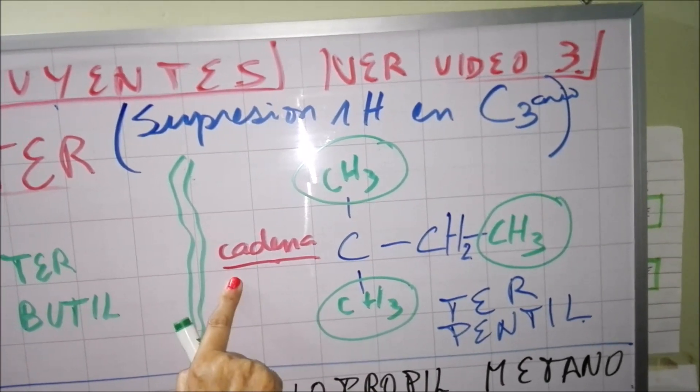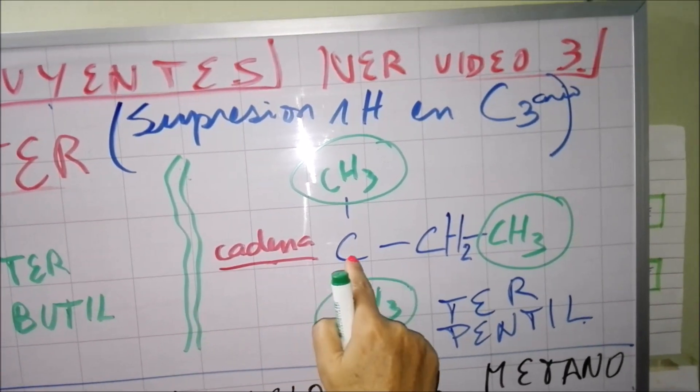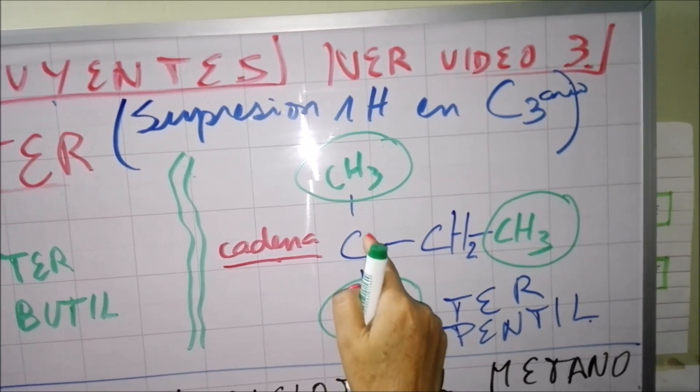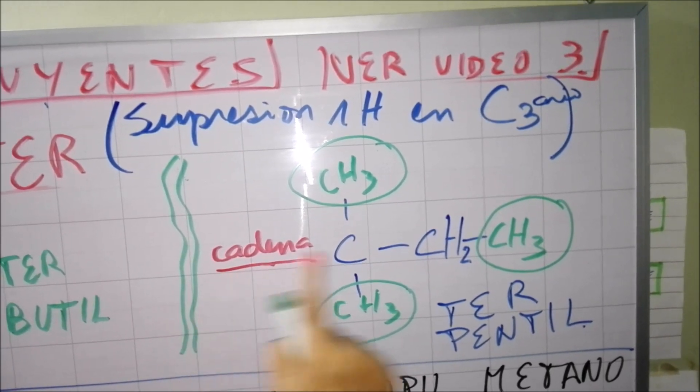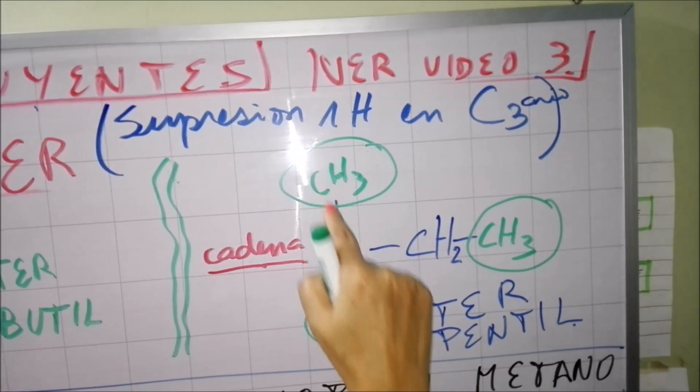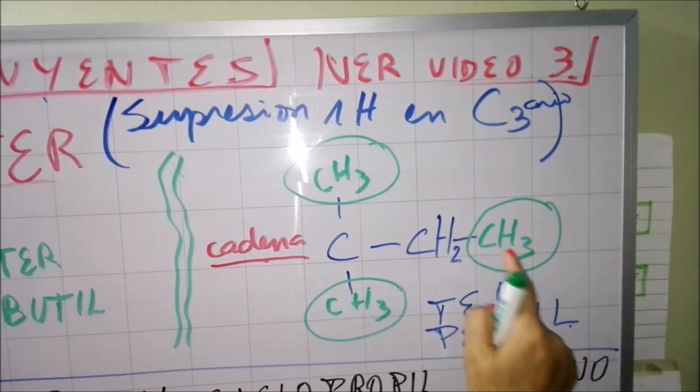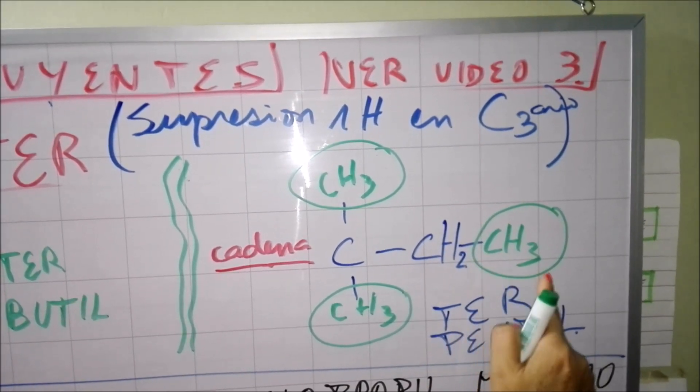Entonces mira, aquí tendría la cadena principal. Carbono aquí es una pérdida, como te decía, un hidrógeno que se pierde para poder colgar de la cadena. Y aquí mira 1, 2, 3, 4, 5 porque se llama terpentil.